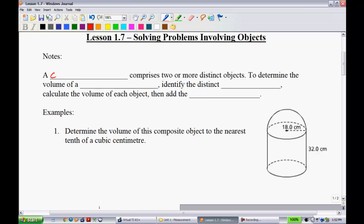A composite object comprises two or more distinct shapes. To determine the volume of a composite object, identify the distinct objects that it has. For instance, like the one that we have right down here, that's an example of a hemisphere and a cylinder. If you wanted to calculate the volume, you'd calculate the volume of each object, then add the volumes together, and then you'd simply have it all.